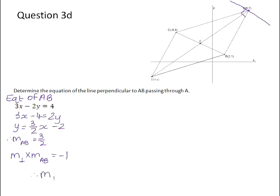So that means the gradient of the perpendicular has to be negative, because only a positive times a negative will give you a negative, and it needs to be the reciprocal fraction. So it will be negative 2 over 3.